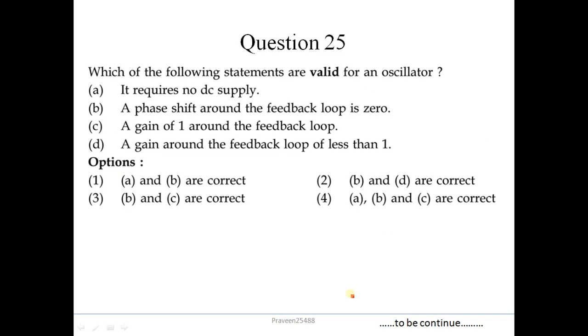Question number 25. Which of the following statements are valid for an oscillator? So we know that oscillator is used to generate a standard signal. So it may or may not require DC supply. So this is not correct. A phase shift around the feedback loop is 0. This is correct. A gain of 1 around the feedback loop. We know that Aβ is equal to 1. This is also correct. A gain around the feedback loop of less than 1. This is not correct. So B and C are correct. The third one is the correct answer.